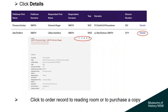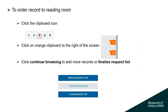Click on the details of the result you want to view or purchase copies of. To order the record to our reading room, click on the black clipboard icon, then click on the orange clipboard to the right of the screen. Click Continue Browsing to add more records, or once you've finished, finalize the request list.